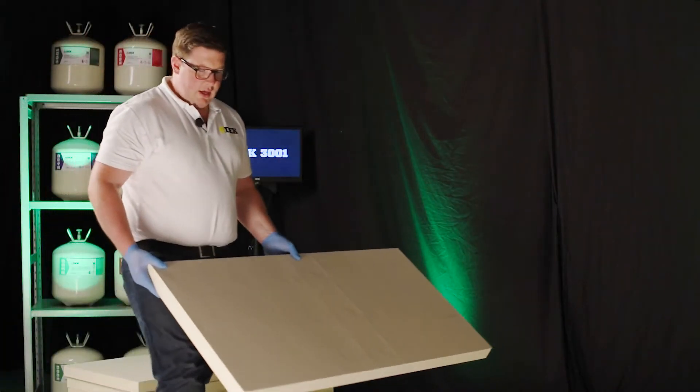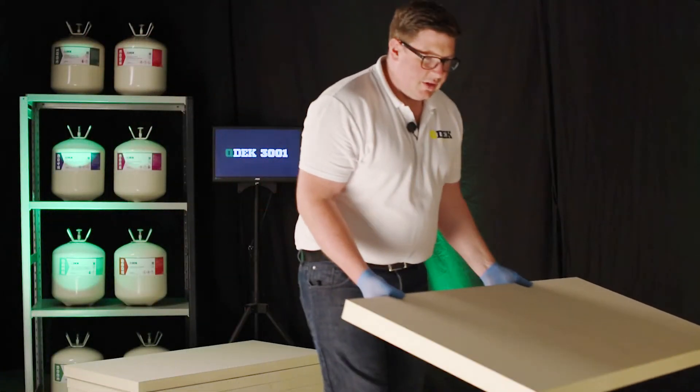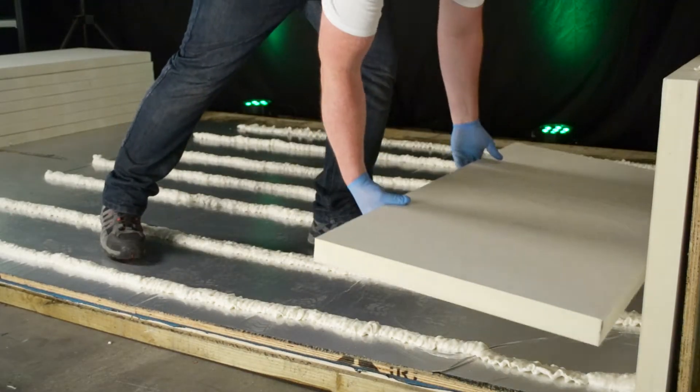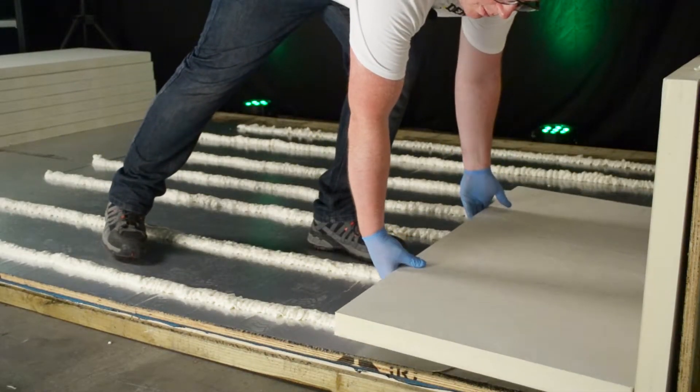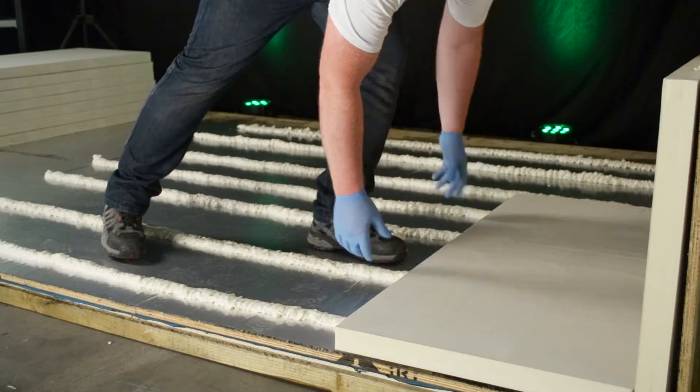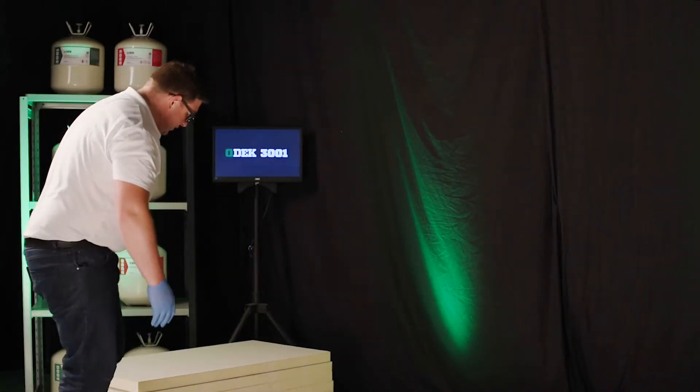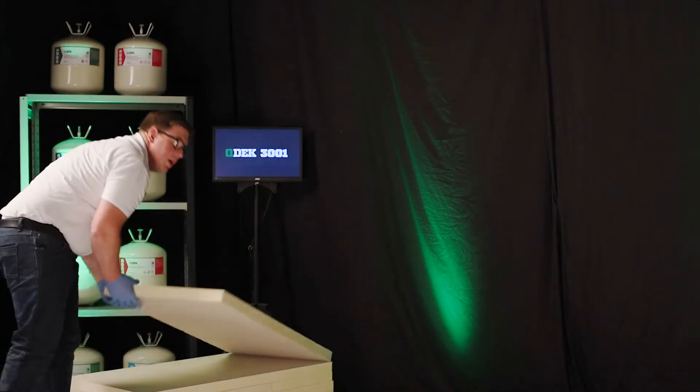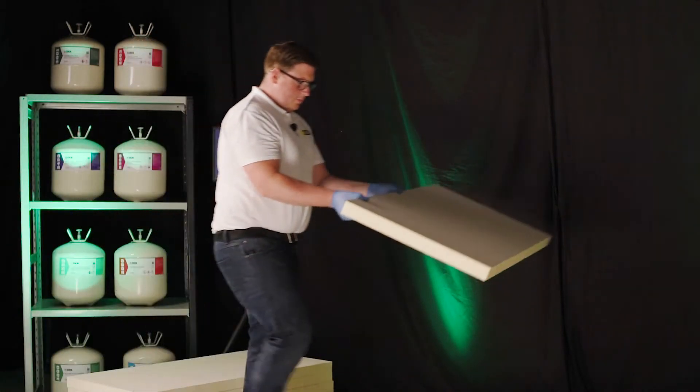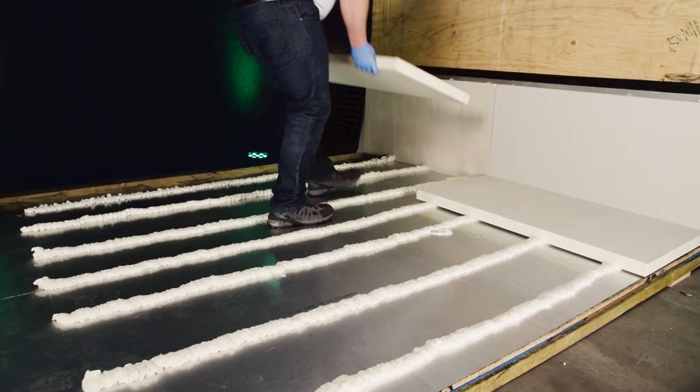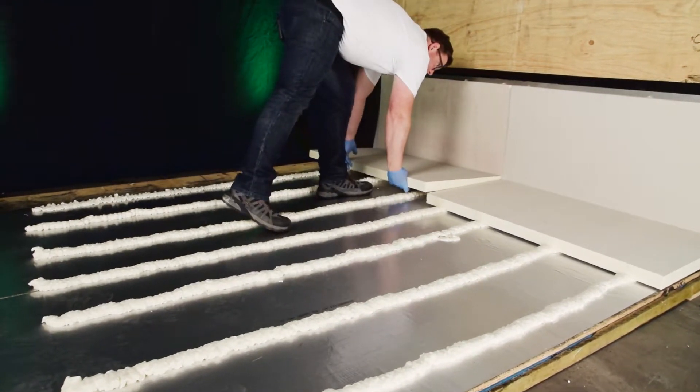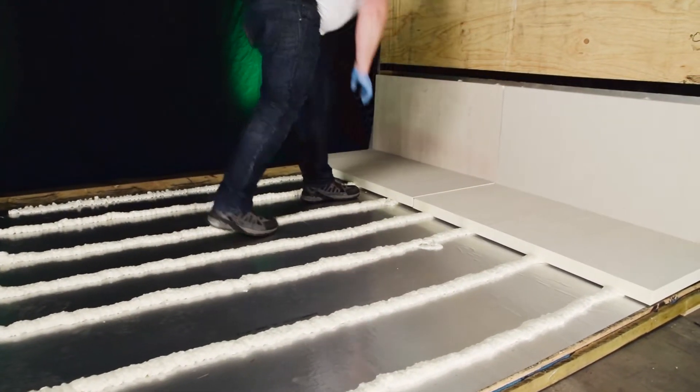We're now going to place the insulation boards and just lay them onto the adhesive. For the purpose of this, we are going to have straight runs of insulation, not stagger them like you would do in the field. So, lay the adhesive in, lay the boards into the adhesive